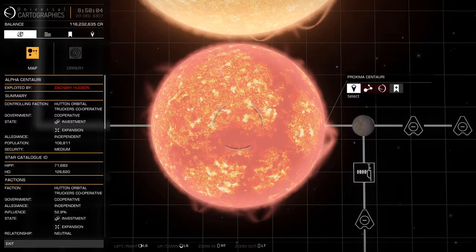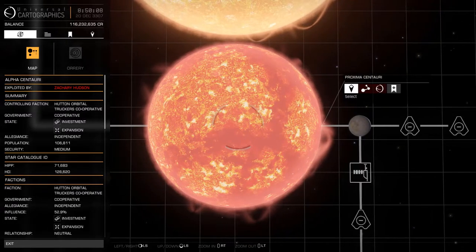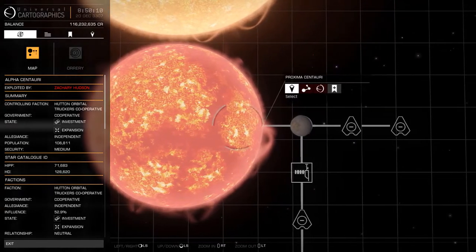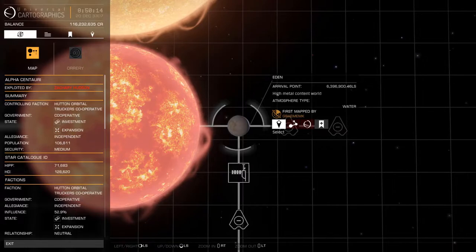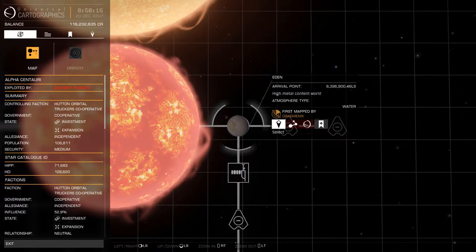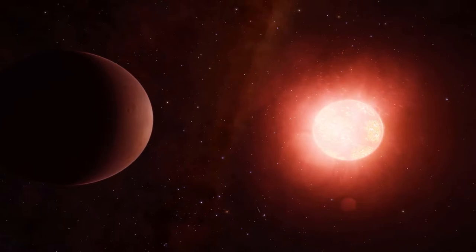Proxima Centauri b is orbiting in the habitable zone of the red dwarf star Proxima Centauri. The exoplanet is orbiting within the habitable zone, 0.0485 astronomical units from its star, the region where, with the correct planetary conditions and atmospheric properties, liquid water may exist on the surface of the planet.